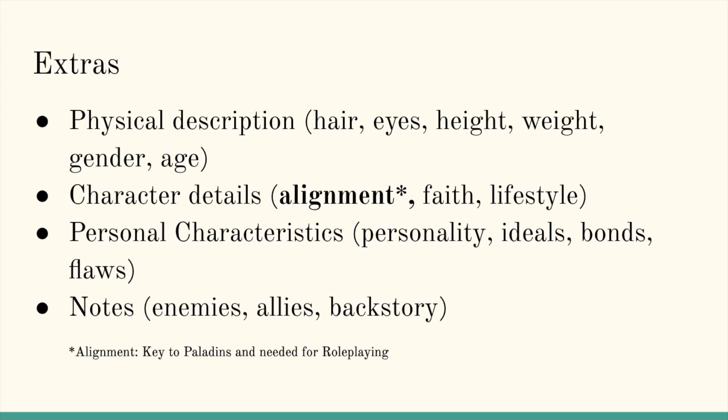Extras. Lastly, in building your character, you'll want to look at the physical description: what color is their hair, their eyes, how tall are they, are they heavyset or super thin, what gender are they, and how old are they? Other character details include alignment, which is very important to paladins and is a great basis for role-playing. Faith — does your character worship a certain deity? What kind of lifestyle does your character have? Do they have a lot of money or not? Personal characteristics include personality, ideals, bonds, and flaws. D&D Beyond has a great resource for calculating this, but there are also random tables online that you can roll d6s for to decide these.